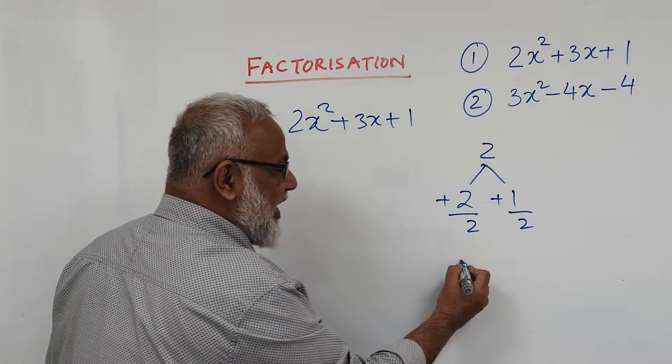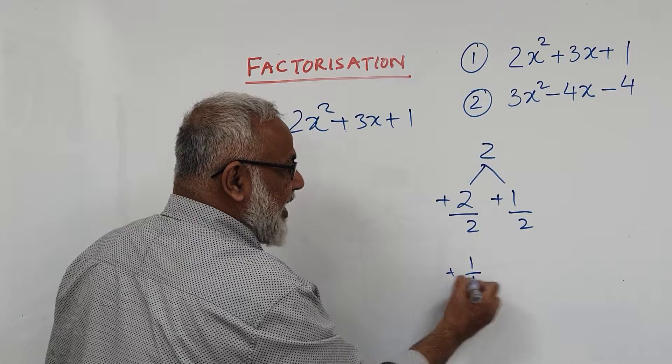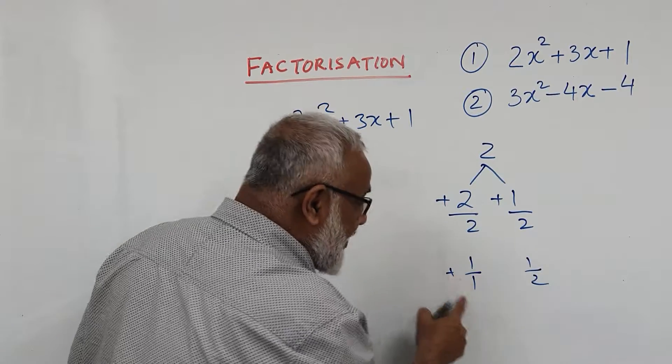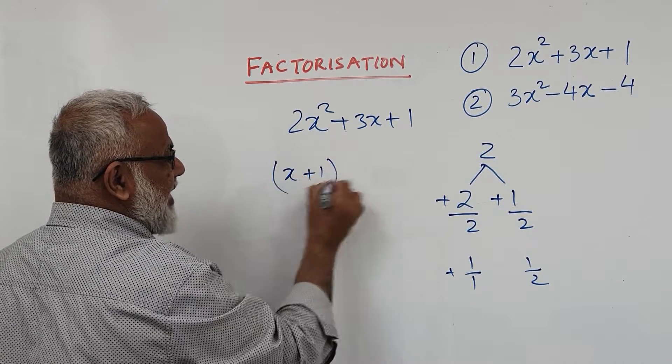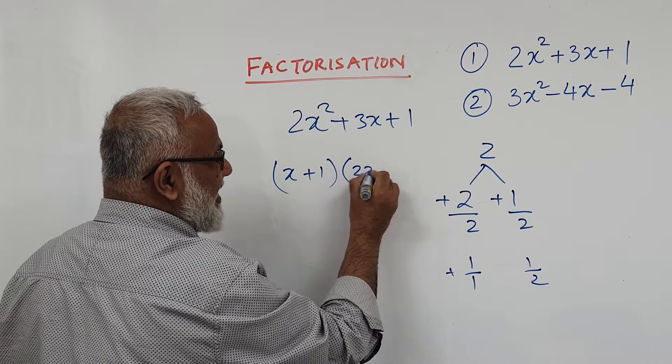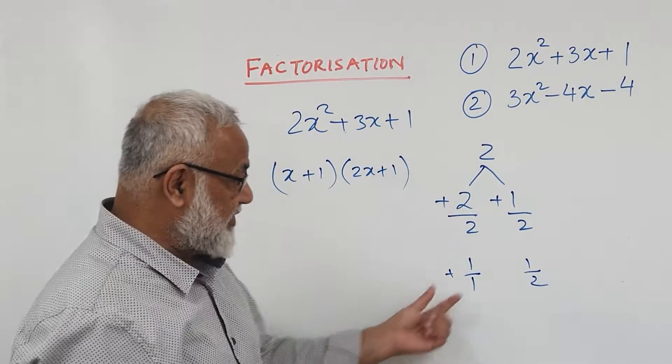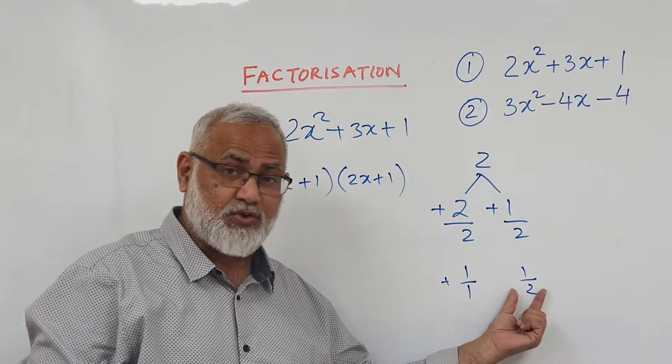Now what happens when you simplify? The answer will be 1 over 1 and that is 1 over 2. That 1 means 1x. So x plus 1 in the first bracket and 2x plus in the second bracket. You're right. If this is 1, it means x. If this is 2, that means 2x.